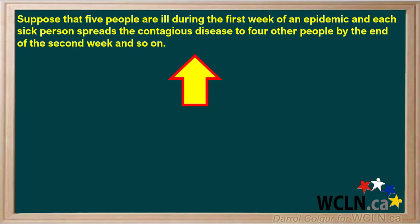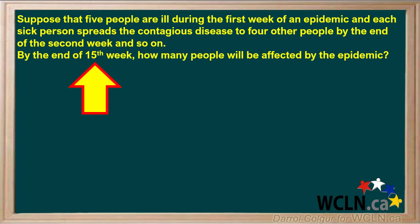We're asked to imagine an epidemic in which five people are ill during the first week. During the second week, each of these five people spreads the contagious disease to four other people. This trend of each person with the disease infecting four others within a week continues. We're asked for the total number of people that have been affected by this epidemic by the end of the 15th week.